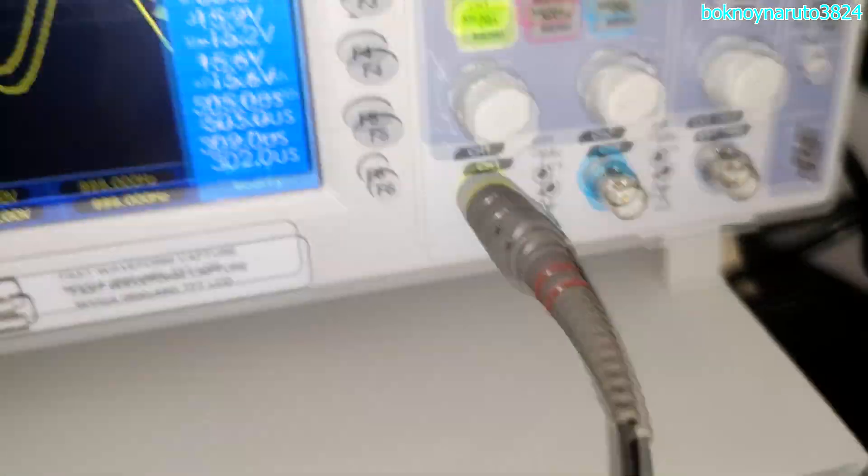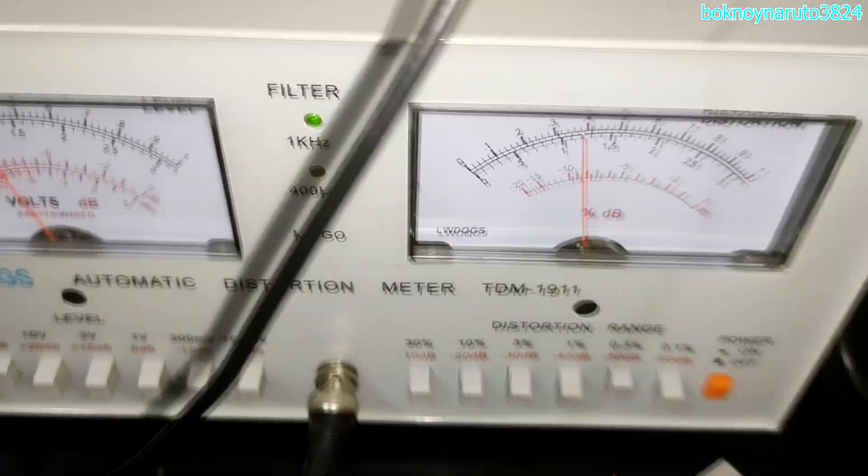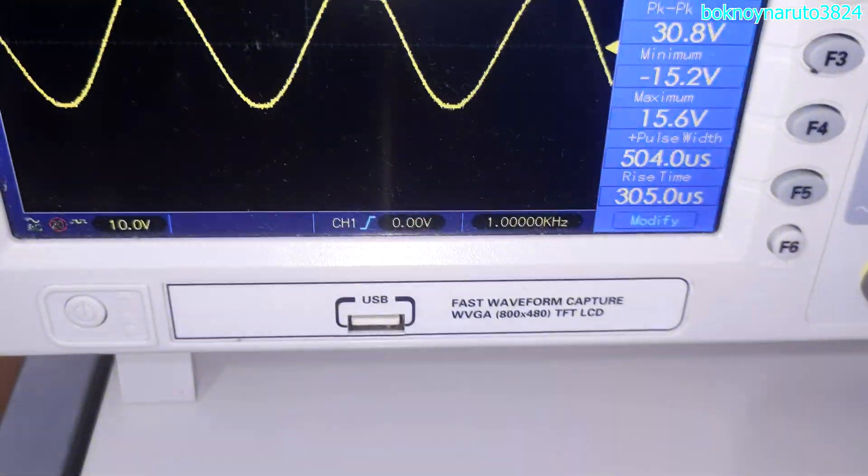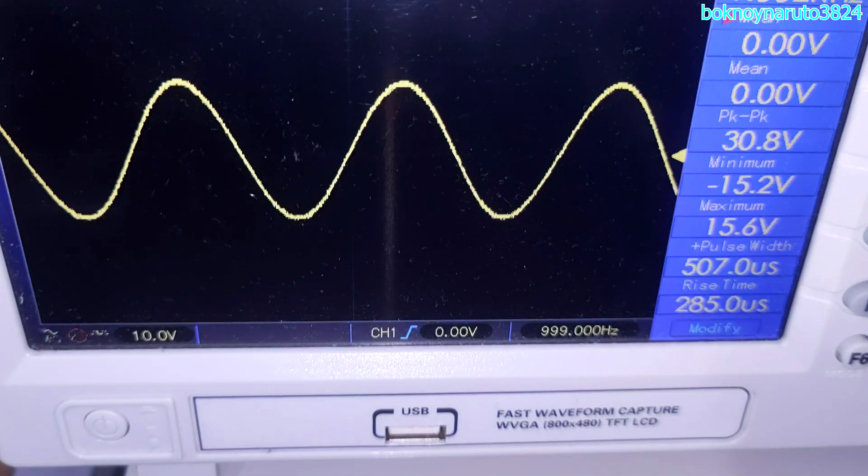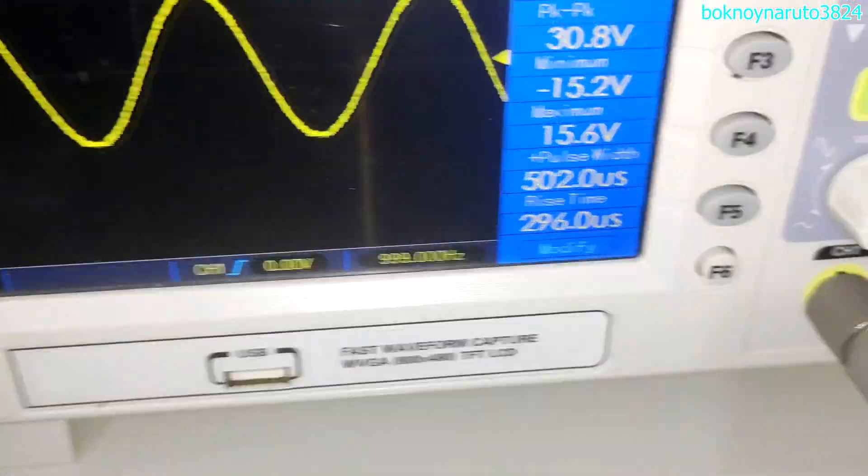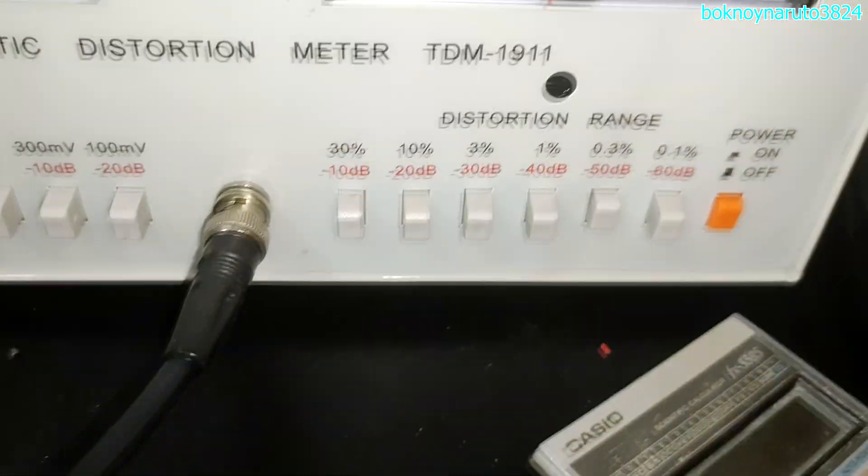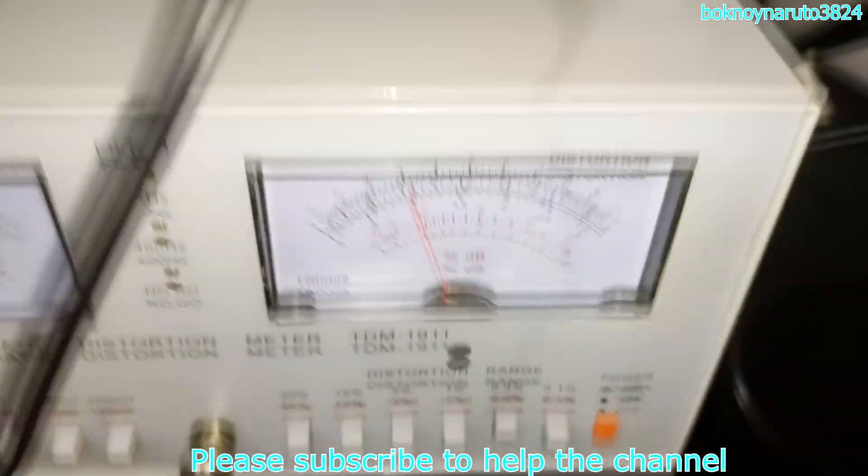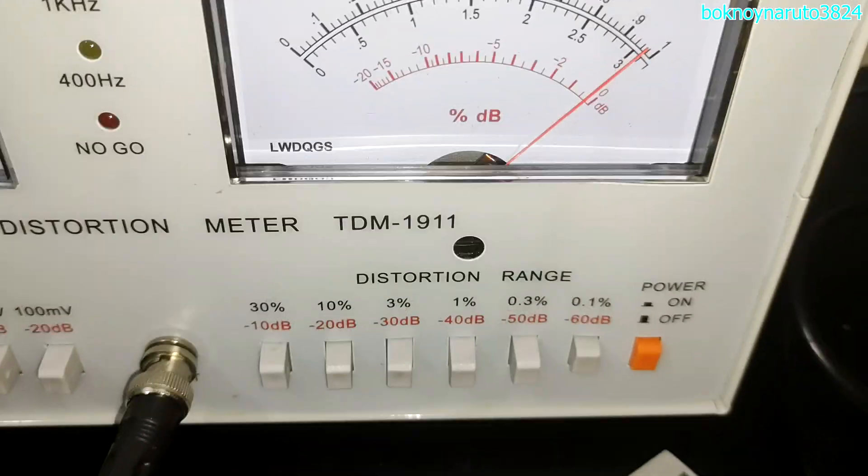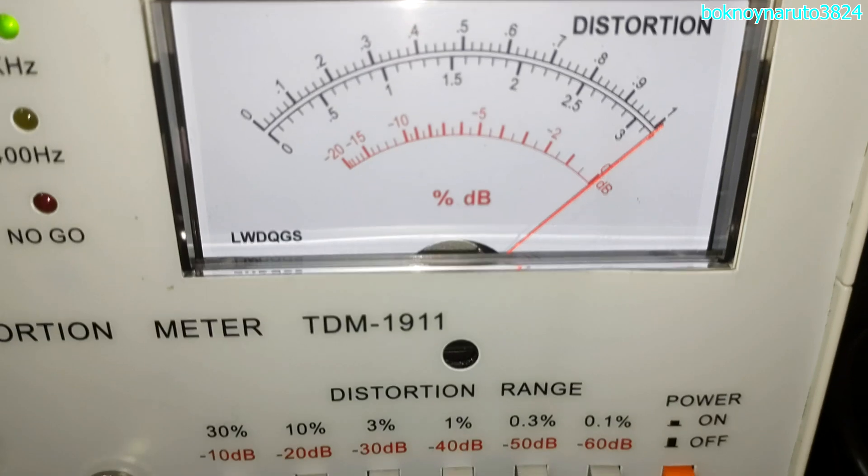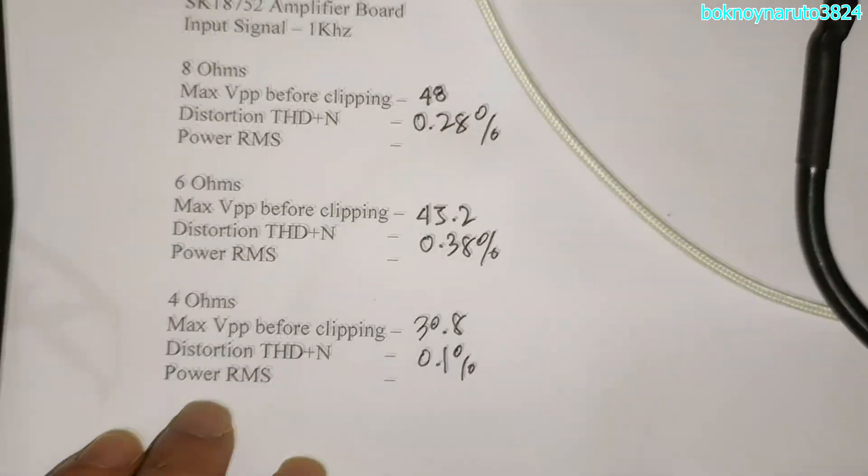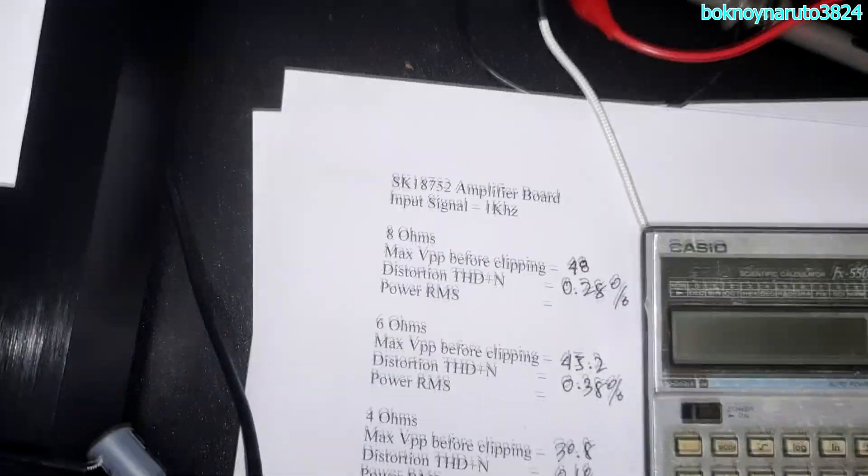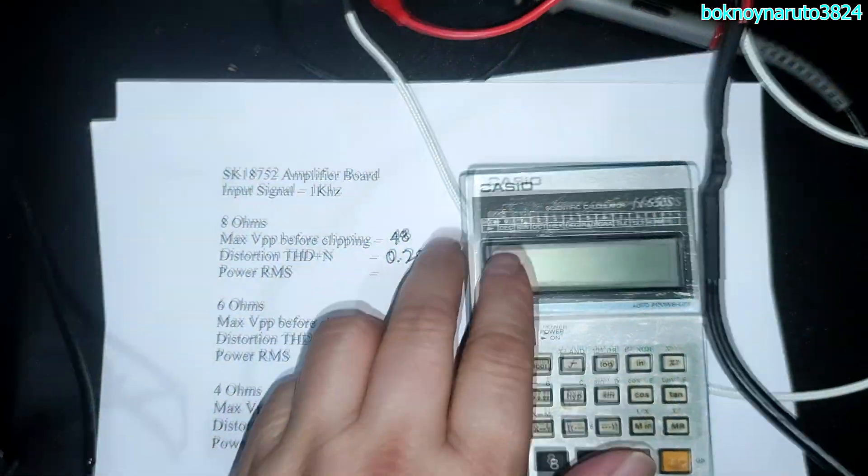Now let's look at the THD. The THD actually is pretty low. At 30.8 volts, so the THD has stabilized. That's the maximum voltage output at 4 ohms load: 30.8 volts peak to peak at 0.1%.